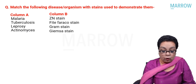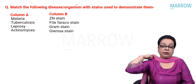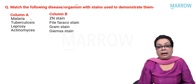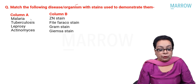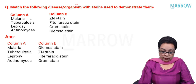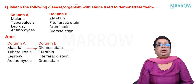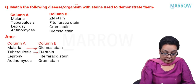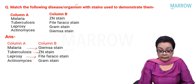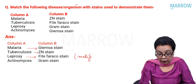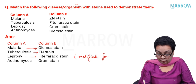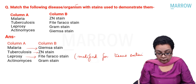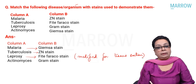Match the following disease or organism with the stains used to demonstrate them: malaria, tuberculosis, leprosy, actinomyces. For malaria diagnosis we generally use Giemsa stain. For tuberculosis we use the ZN stain. For leprosy, the Fite-Faraco stain, which is a modified ZN stain for tissue sections. For actinomyces we use the gram stain.